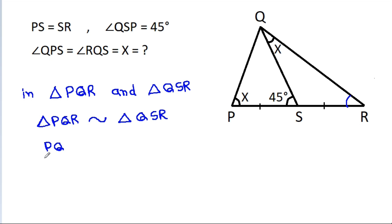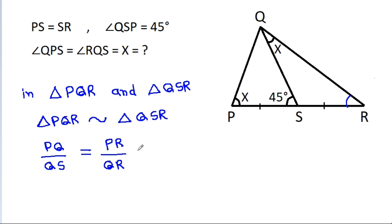So, PQ by QS will be equal to PR by QR, which will be equal to QR by SR.